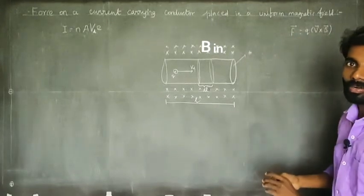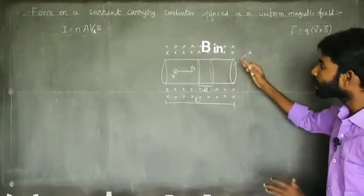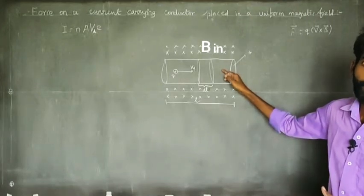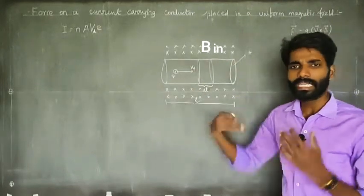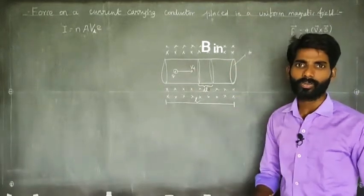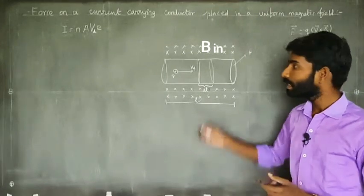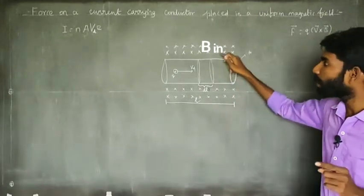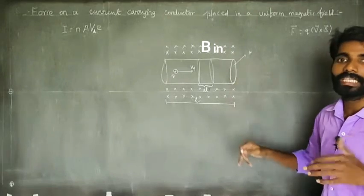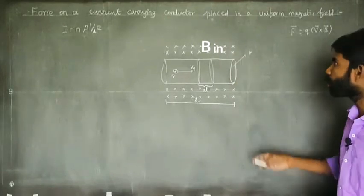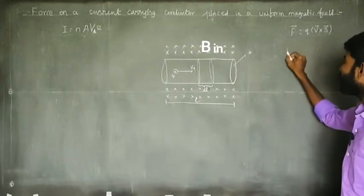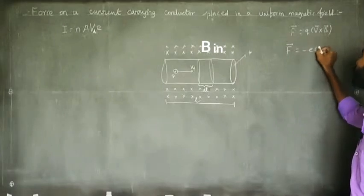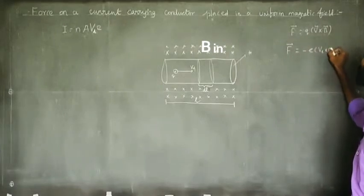Now we are going to apply this to our conductor. In this conductor, there are many electrons — free electrons in the magnetic field. What force do they experience? Therefore, the force on a free electron is: F vector is equal to minus e times Vd cross B.